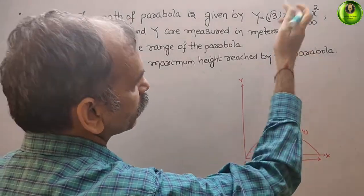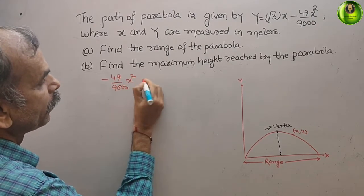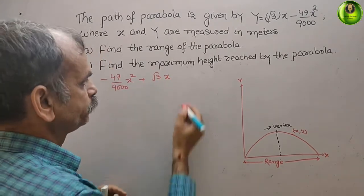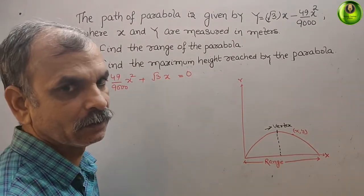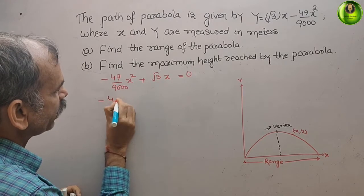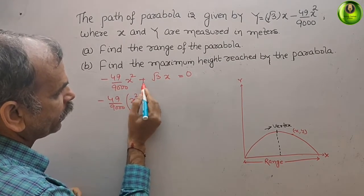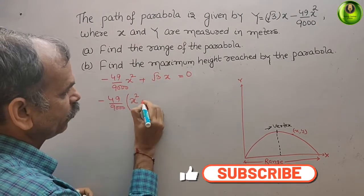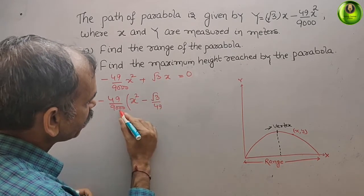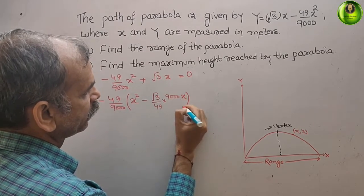Our standard form comes from here. It will give us: −(49/9000)·x² + √3·x. Now we will set it equal to 0. We want the coordinates, so take −49/9000 as common. After factoring out −49/9000, what is left inside is x² minus (9000√3/49)·x. That is equal to 0.